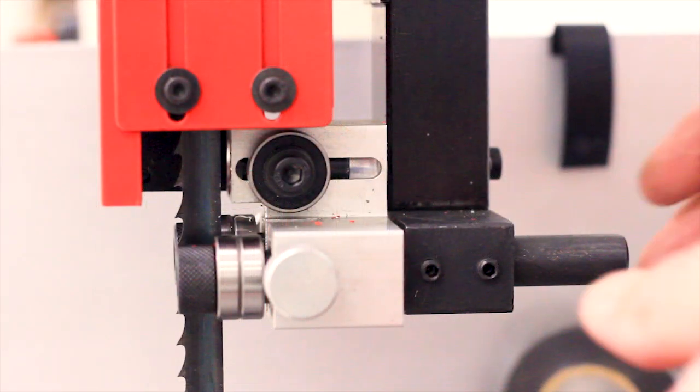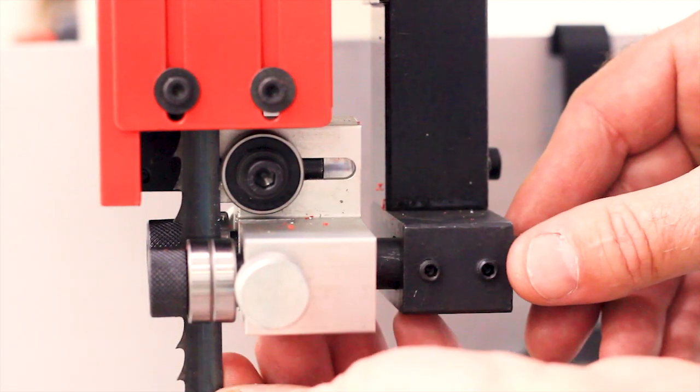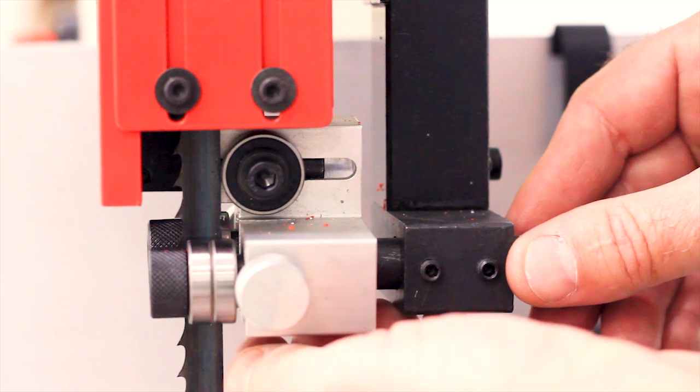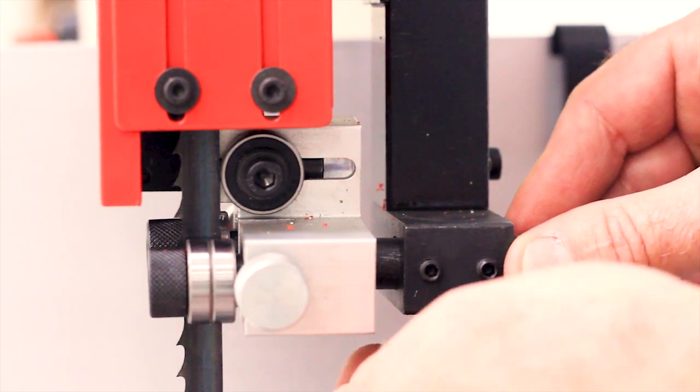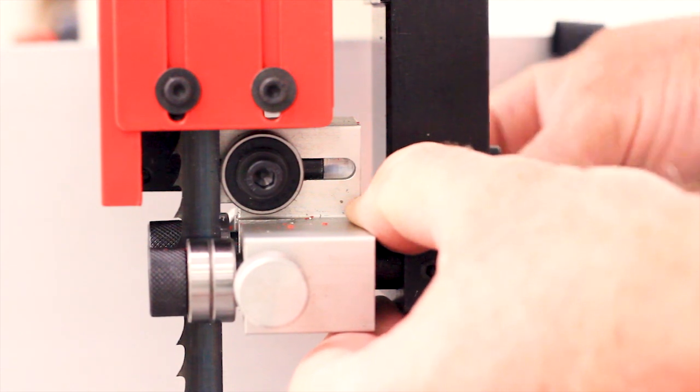The first step is to move your side bearings over the body of your bandsaw blade. The trick is you want to have as much of the bearing on the blade as possible without getting involved with the teeth. And that looks pretty good, so we're going to go ahead and tighten that up.